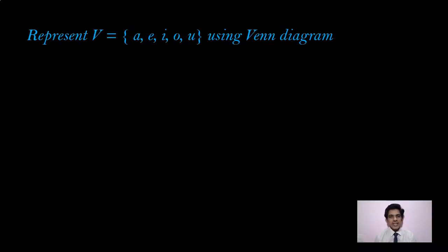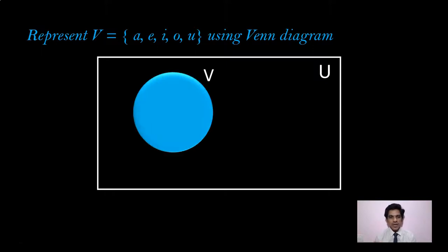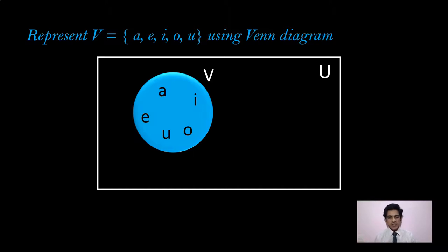Let us take one more example. Represent set V = {A, E, I, O, U} using a Venn Diagram. Draw a rectangle first and take it as the Universal Set. Then draw a circle and name it V. Write the elements A, E, I, O, U inside that circle. The elements are represented inside the circle.